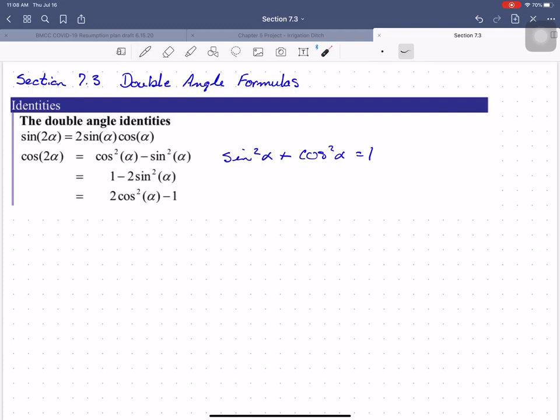If you combine the basic double angle formula for cosine with the Pythagorean identity, you get these two alternate forms. Which one you use really depends on the problem you're solving and how which one's going to be most convenient. So we're going to start by just playing some games here. Let's start with if sine theta equals 3 fifths and theta is in the second quadrant, find the exact value for sine 2 theta.